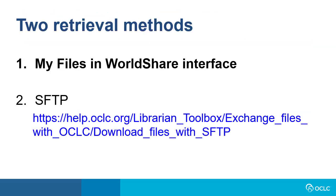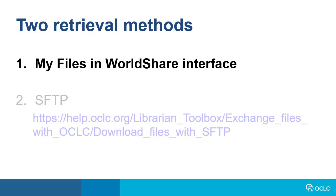There are two ways to download files of records for your library. One way is via My Files within the WorldShare interface. The second way is via SFTP, or Secure File Transfer Protocol. If you choose to use SFTP, contact OCLC support in your region to request a username and password. In this video, we will focus on downloading your records from My Files.